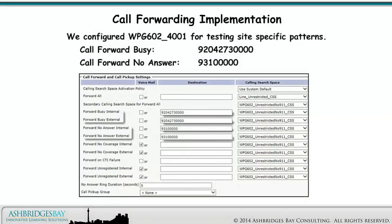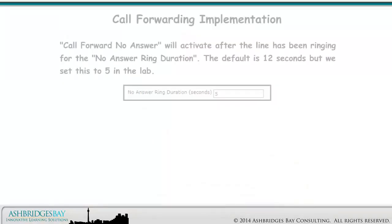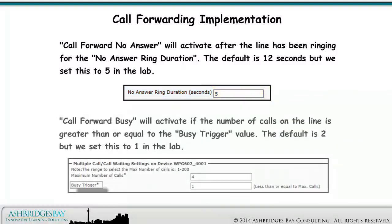We configured Winnipeg 602-4001 for testing site-specific patterns: call forward busy to 9-204-273-0000 and call forward no answer to 9-310-0000. Call forward no answer will activate after the line has been ringing for the no answer ring duration — the default is 12 seconds, but we set this to 5 in the lab. Call forward busy will activate if the number of calls on the line is greater than or equal to the busy trigger value — the default is 2, but we set this to 1 in the lab.